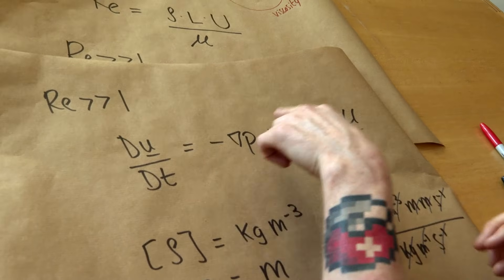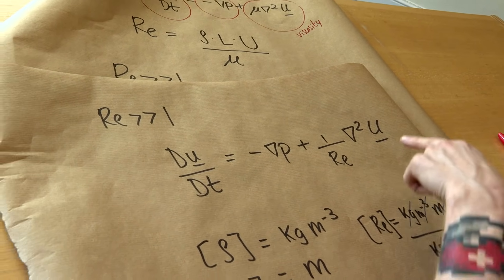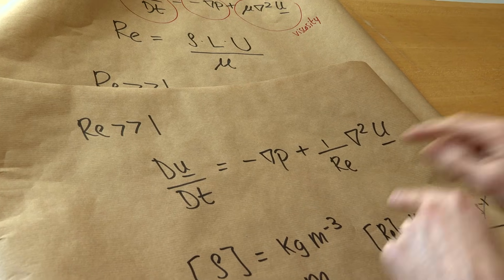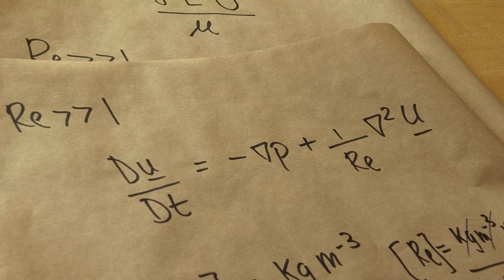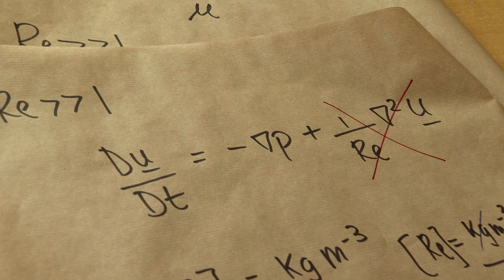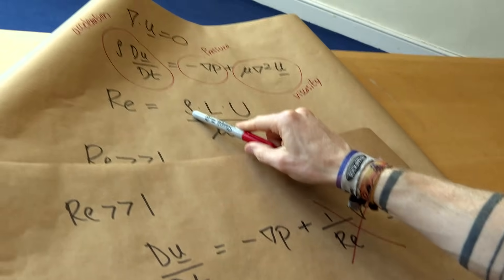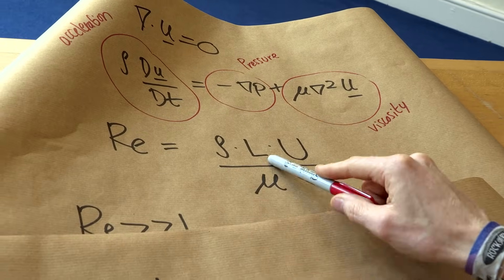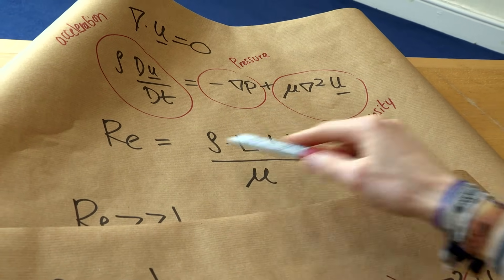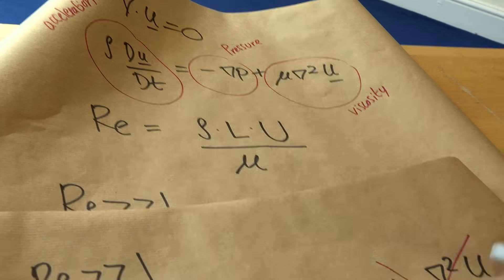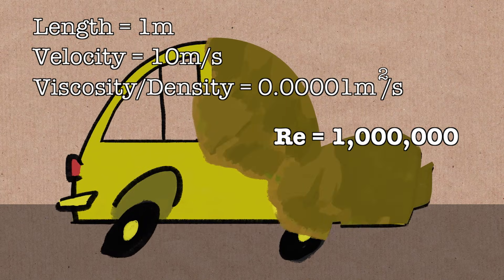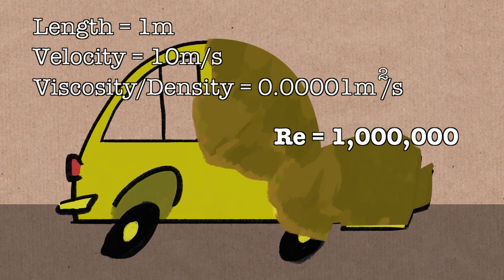When the Reynolds number is really big, we have acceleration equals pressure plus one-over-a-really-big-number times viscosity. One divided by a really big number is really small, so that viscosity term doesn't matter. In the situation of really large Reynolds numbers - which could be very high density, very long, or very fast fluids - viscosity doesn't matter. So you're driving your car really, really fast - that's why the viscosity of the air doesn't clean the dirt from your car. You're in a large Reynolds number regime and the equations say viscosity doesn't matter.